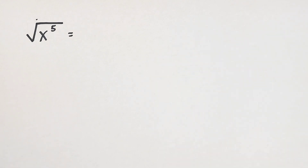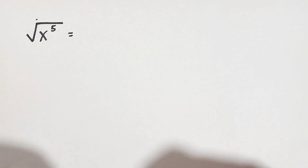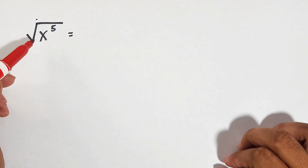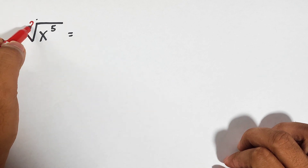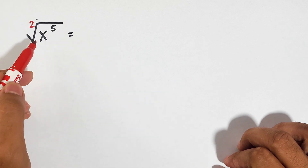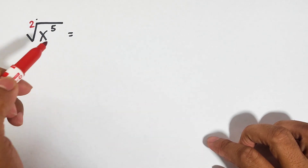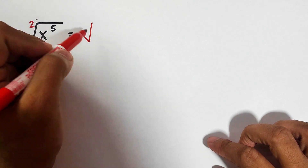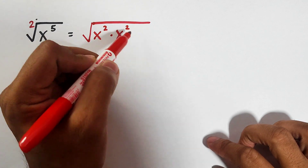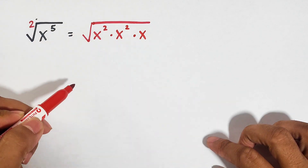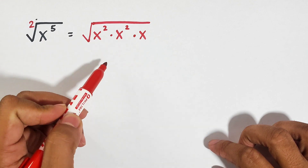For this topic, what we have here is x raised to the fifth power. There are multiple ways on how to simplify this. Let me show you the first way on how to simplify x to the fifth power. Remember, if we have the square root of x raised to the fifth power, the index here — the number in the radical — is 2. The first step is that we can break down x to the fifth power as factors: the square root of x squared times x squared times x.